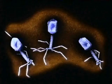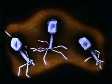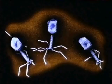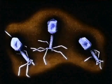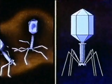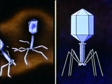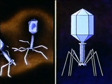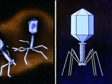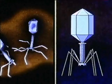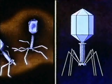One of the most elaborate viral structures is that of a virus called phage, which attacks bacteria. The top part, or phage head, is a hollow protein capsule. Inside is the nucleic acid. The head rests on a hollow sheath to which tail fibers are attached.